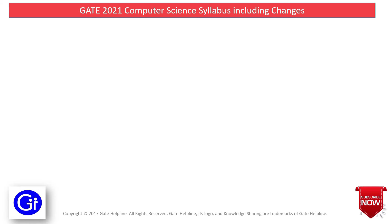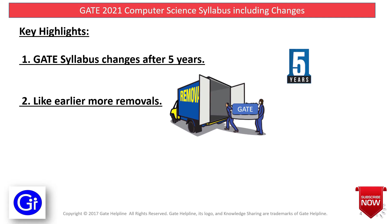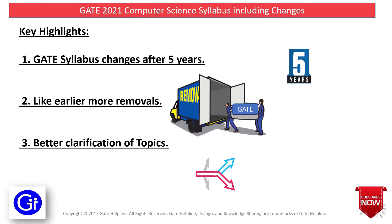The key highlights of GATE 2021 CS syllabus: Point 1 - GATE syllabus changes after every 5 years, and last time it was 2016. Point 2 - like earlier, more removals are there, so the syllabus is short and precise. Point 3 - better clarification of topics; more description and depth is added to the syllabus. So friends, let's start the video.